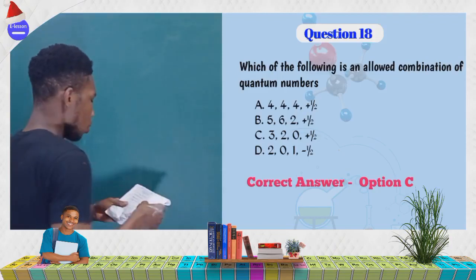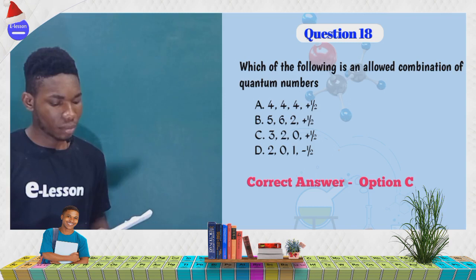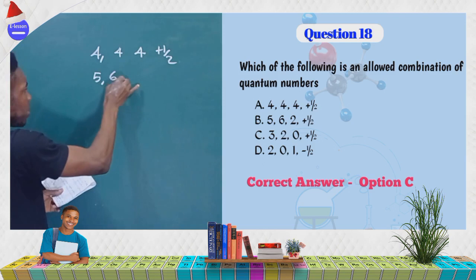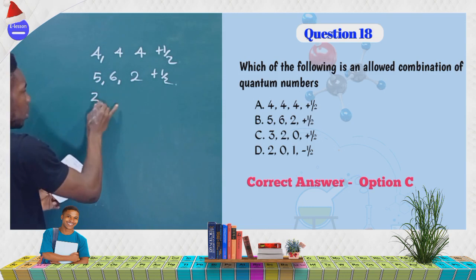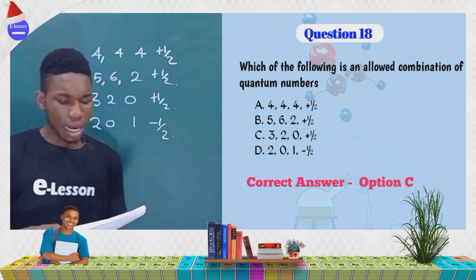Which of the following is an allowed combination of quantum numbers? You have: (A) 4, 4, 4, +½; (B) 5, 6, 2, +½; (C) 3, 2, 0, +½; (D) 2, 0, 1, −½. Which of these has a possible combination of quantum numbers?